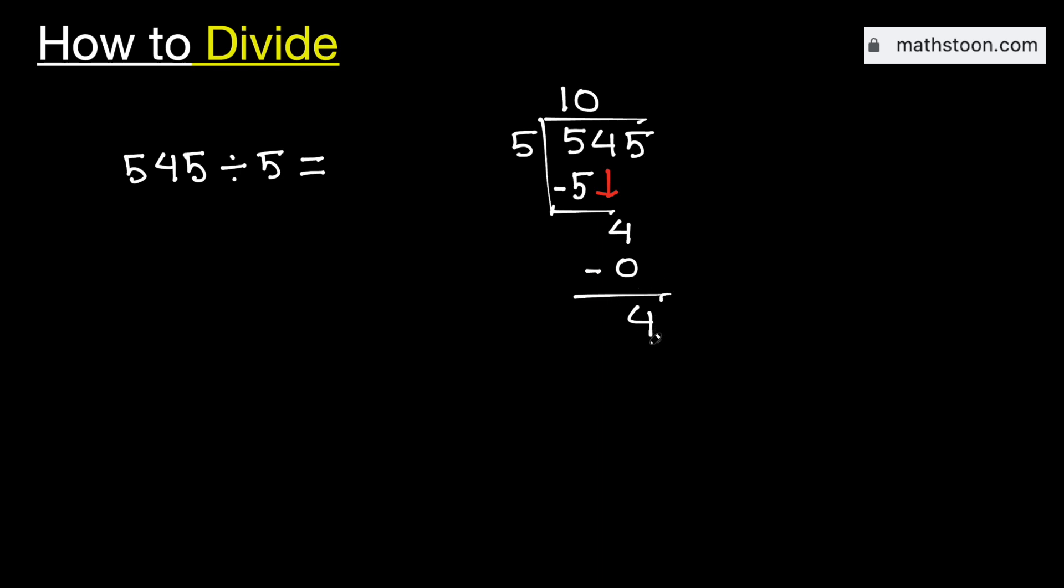But in this case, we will consider this 4 as less than 5. That is why we need to bring down this adjacent 5 here.